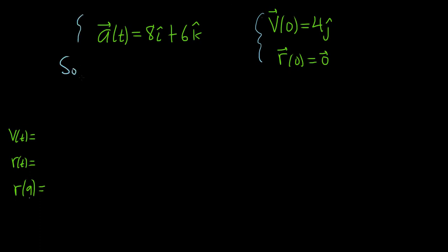So solution. The first thing we'll do is find v of t. Whenever you have the acceleration and you integrate it, you'll get the velocity. That's because the derivative of velocity is acceleration. So integrating the acceleration, we're going to get v of t.